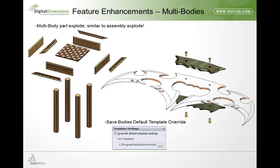The next feature enhancement for SolidWorks 2012 is multi-body parts. For those working on complex weldments, we now have the ability to natively create a multi-body part explode, which functions just like an assembly explode. For those using the master part modeling technique — building complex geometry in a single part file that will become multiple pieces in manufacturing — you can then take individual bodies and save them out as individual parts to create an assembly. One enhancement relative to saving bodies out is the ability to specify what template these parts will be saved with.